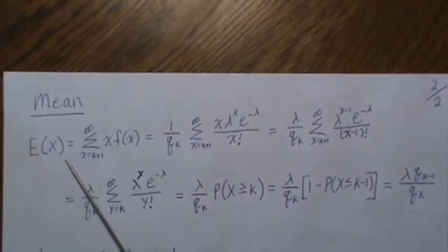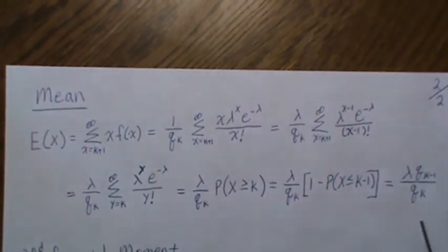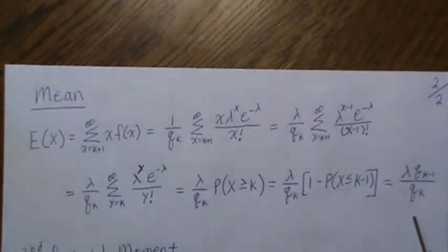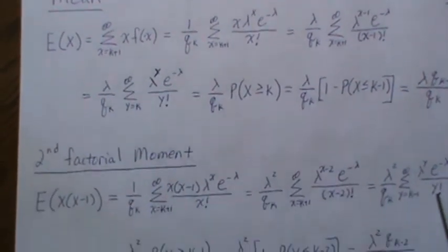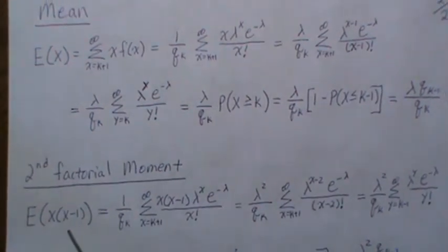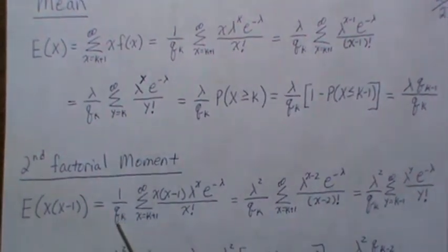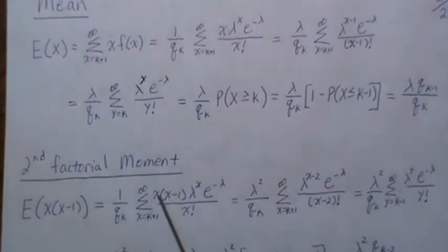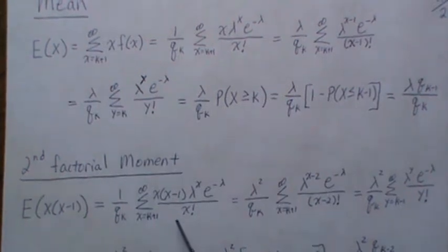So this is the mean of a truncated Poisson. At the end of the video we'll look at the zero-truncated Poisson, but this is for a generic k. Now let's look at the second factorial moment, E[x(x-1)]. We do basically the same process — bring out q sub k and sum x(x-1) times the PMF over all values.